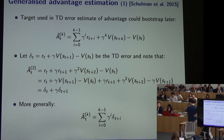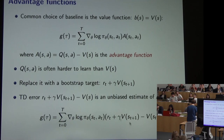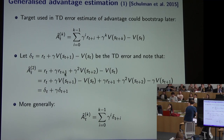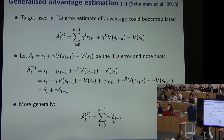With some algebra we can manipulate this expression into a different form. The delta term is the TD error. For k equal to one, delta is that whole term. For k equal to two, we're summing two sample rewards then bootstrapping; rewriting and grouping terms differently, we see we're actually summing two different TD errors. More generally, for any value of k, we can write the k-step advantage as a sum of TD errors with different discounting.